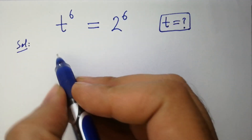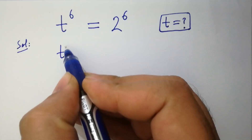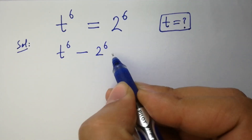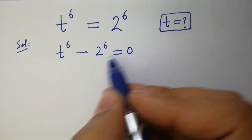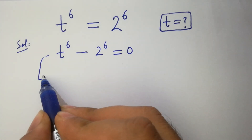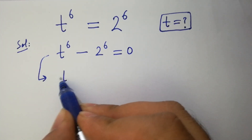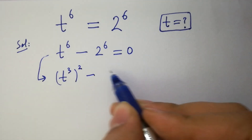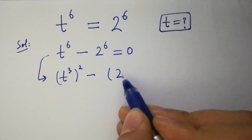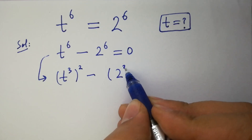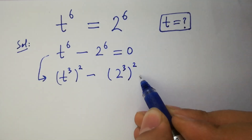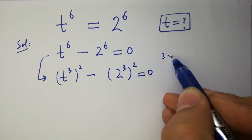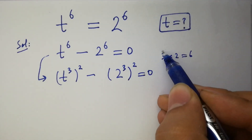It can be written as t to the power 6 minus 2 to the power 6 equals 0, which is the same as t to the power 3, to the whole power 2, minus 2 to the power 3, to the whole power 2, equals 0, since 3 times 2 equals 6.